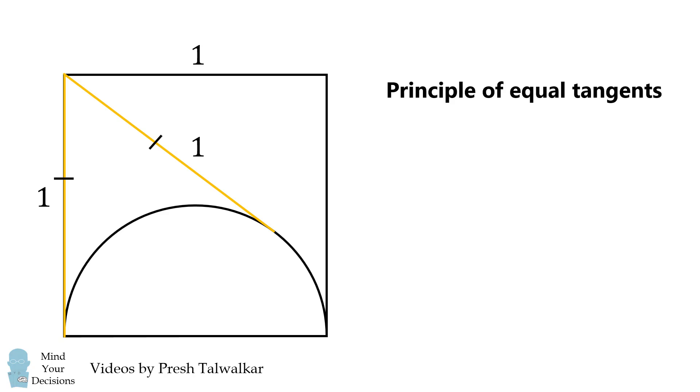Now we're going to construct another set of equal tangents. Notice that this line here, and this line here, will both be external tangents to the semicircle. Therefore, they'll have the same length, and we're going to denote these distances as Y.